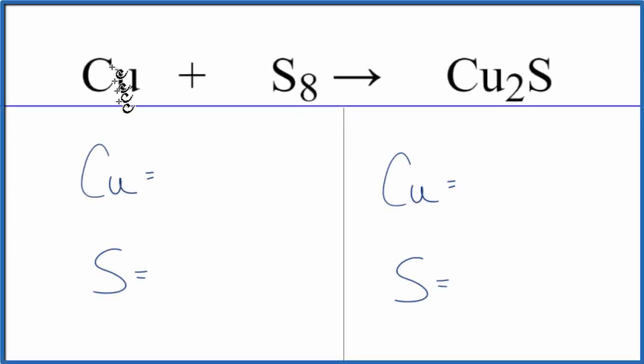In this video, we'll balance the equation for Cu plus S8 yield Cu2S. Sometimes you'll just see Cu plus S, but teachers do give you this octosulfur every once in a while. Good one to know. Let's do it.